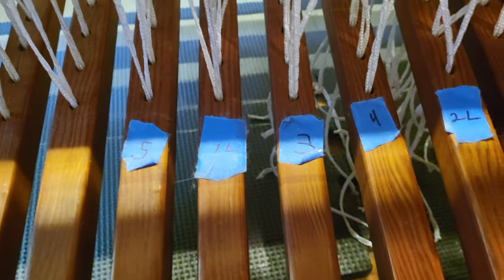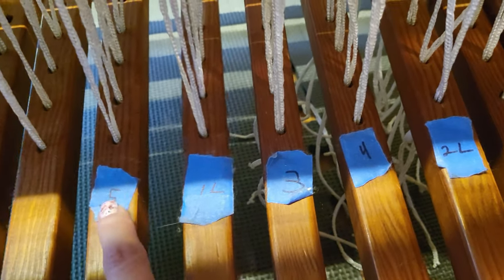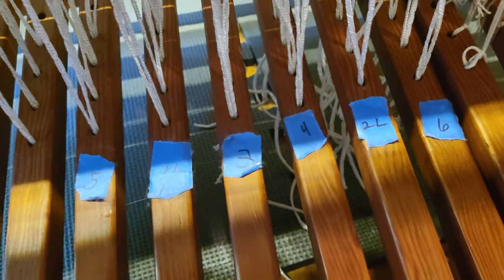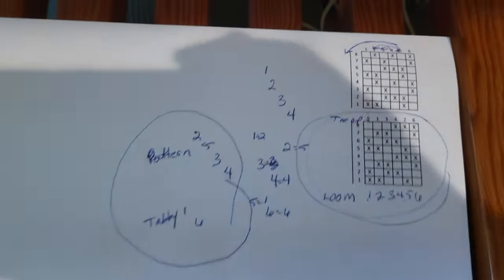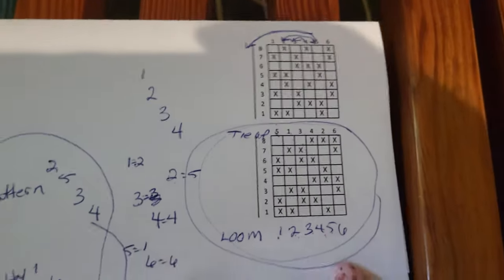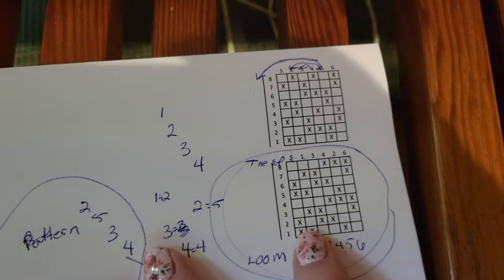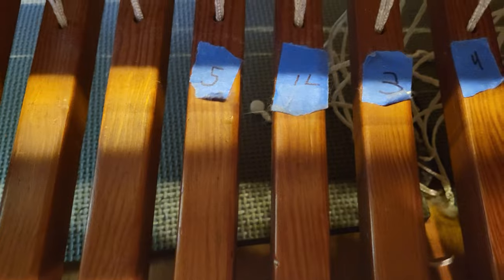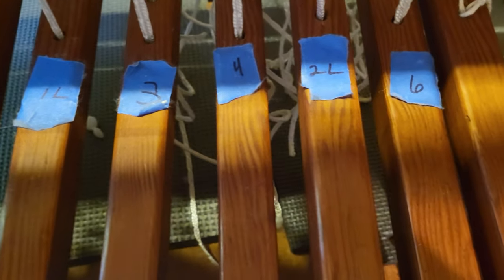I take the treadle that I tie up and I typically tie up the middle treadles that I'm going to be using. And then I use a blue painter's tape and these are reused for each project. And I number the treadle with the tie-up that I did. And so on my modified treadle tie-up, I am labeling these as five, one, three, four, two, and six.